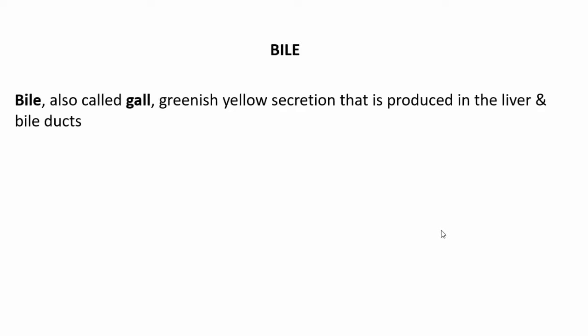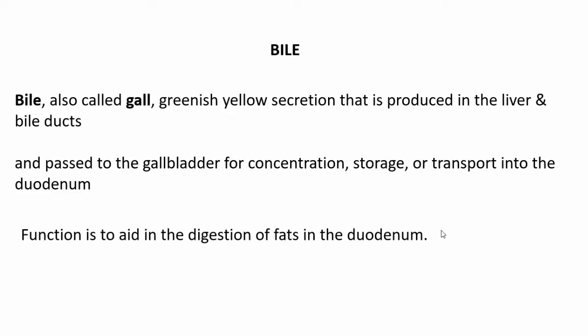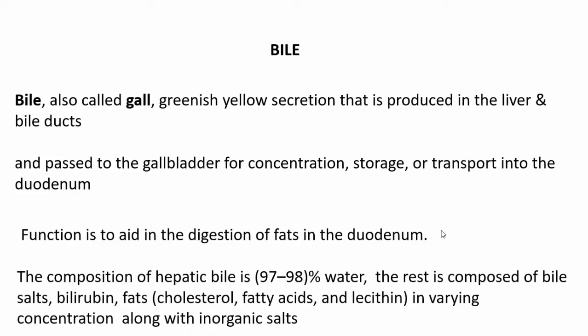Bile, also referred to as gall, is a greenish-yellow secretion produced in the liver and bile ducts. It passes into the gallbladder where it is concentrated and stored, and is finally transmitted into the duodenum through the common bile duct. The main function of bile is to aid in the digestion of fats in the duodenum. The composition of bile is predominantly water, around 97 to 98 percent. The rest is composed of bile salts, bilirubin, fats including cholesterol, fatty acids and lecithin, along with inorganic salts.